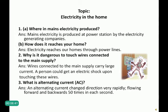Topic: Electricity in the Home. Question 1, Part 1: Where is mains electricity produced? Mains electricity is produced at a power station by electricity generating companies. Part 2: How does it reach your home? Electricity reaches our home through power lines. Question 2: Why is it dangerous to touch wires connected to the mains supply?